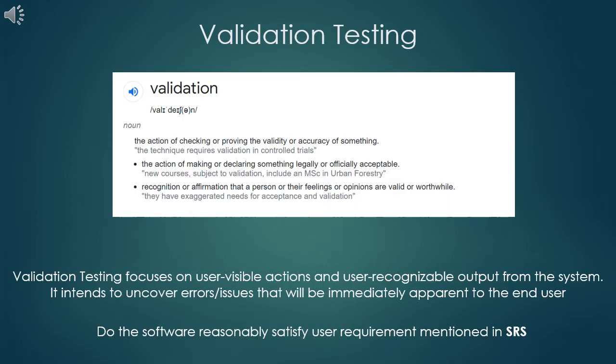Let us see validation testing in detail. Validation is done after unit and integration testing are performed. Validation is the act of declaring something is valid or officially acceptable. In our context, something can be declared as valid or acceptable only if the end user, that is the customer, is satisfied with the software. This is why validation testing is also called as acceptance testing.